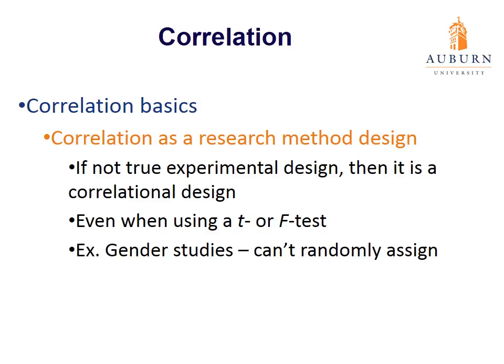For example, with gender studies we can't randomly assign gender — people come as they are — so by default it's a correlational design even though we may be using a T or F test. So if you see a T or F test and want to know if it's an experiment or a correlational design, look for random assignment. If you have random assignment, it's likely a true experimental design. If you have convenient assignment, it's likely a correlational design.